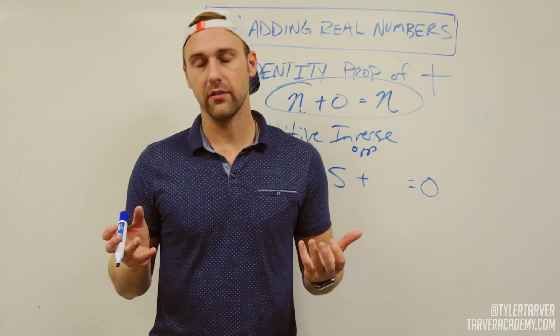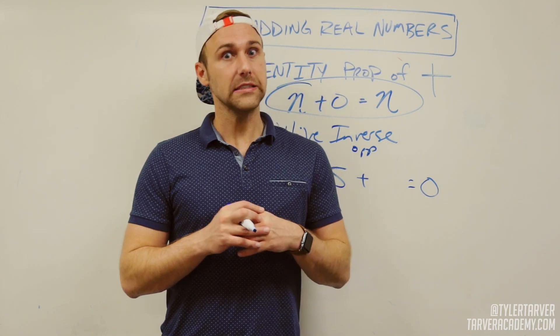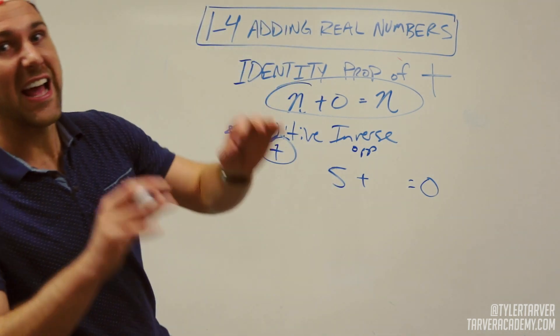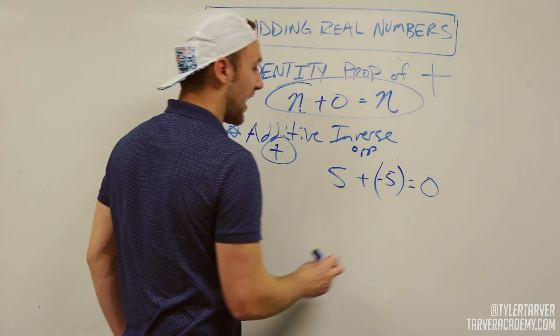Seven? No. Four? No. A billion? Close. Not close at all. The opposite of five would be negative five. So plus negative five.